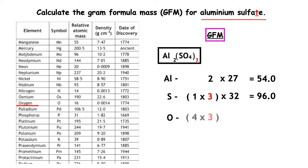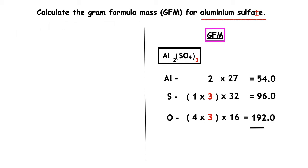Oxygen: how many do we have inside the bracket? We've got 4 multiplied by the number outside the bracket, which is 3. Using page 7, the relative atomic mass of oxygen is 16. 4 times 3 equals 12; 12 times 16 equals 192. When we add all those numbers up, we get a gram formula mass of 342 grams.